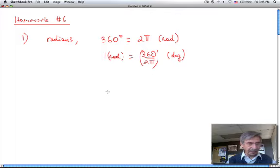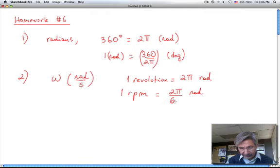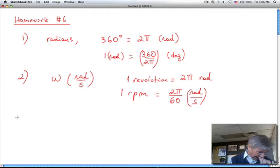Question number two is about an object on a record player. The quantity of interest in circular motion is the angular velocity, measured in radians per second. If you have one revolution, that's 2π radians. So if you have one revolution per minute, that means you do 2π radians over one minute, which is 60 seconds. This is how you transform one revolution per minute into radians per second.